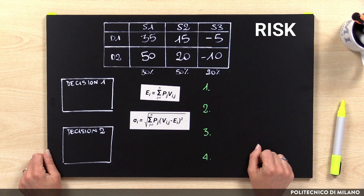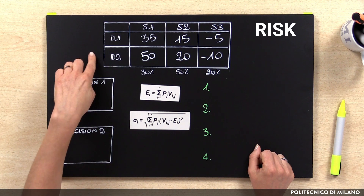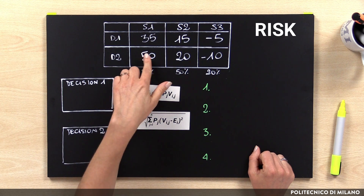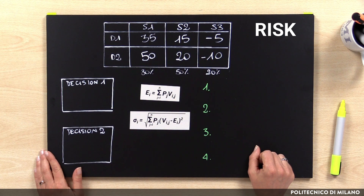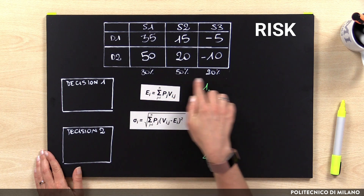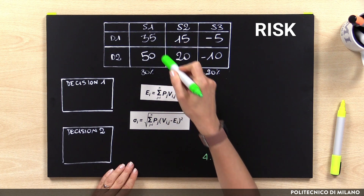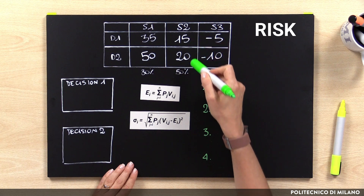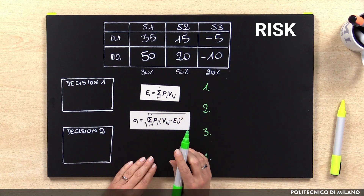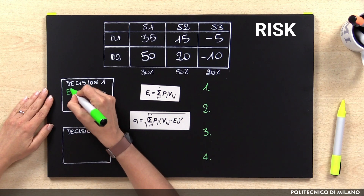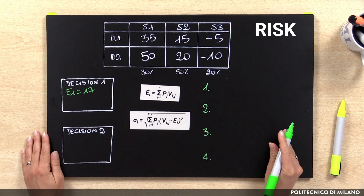The decision maker will be oriented to select the alternative with the higher expected value. For example, if we consider a decision with two possible alternatives D1 and D2, and three possible scenarios S1, S2, and S3, the expected value considers the value of each alternative for each scenario multiplied by the probability of occurrence of each scenario. D1 has an expected value equal to 30% × 35 + 50% × 15 + 20% × (−5), with a final value of 17. Doing the same for D2, we obtain an expected value of 23.